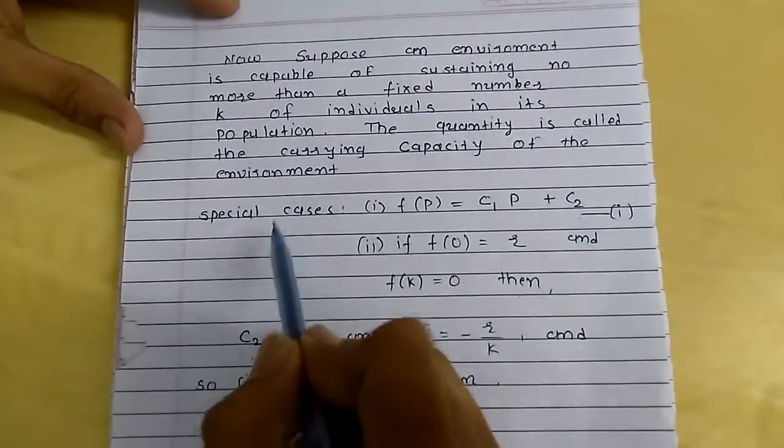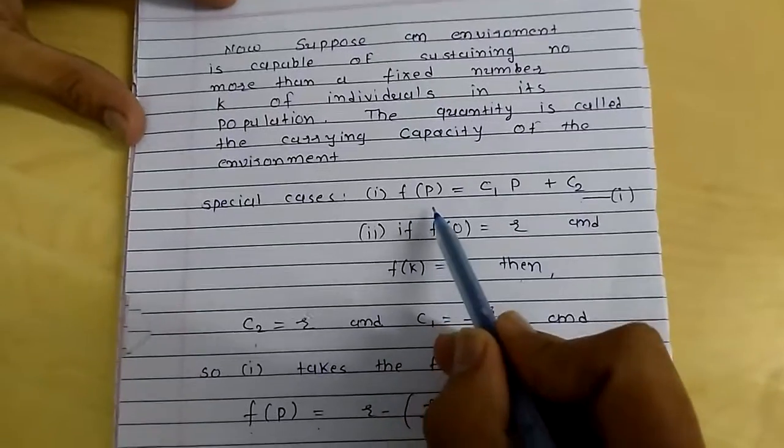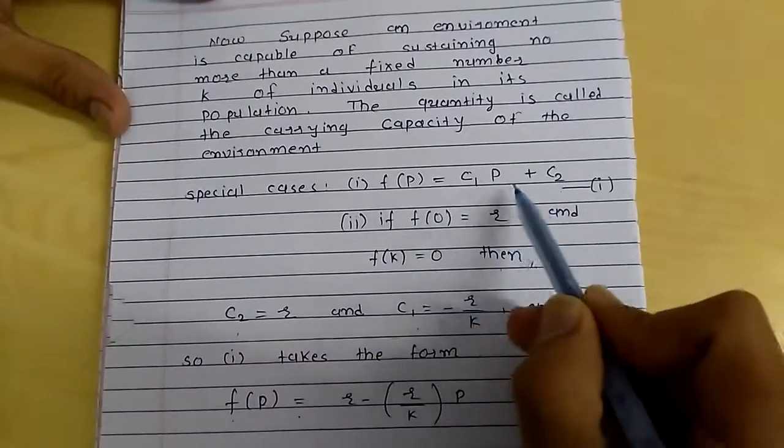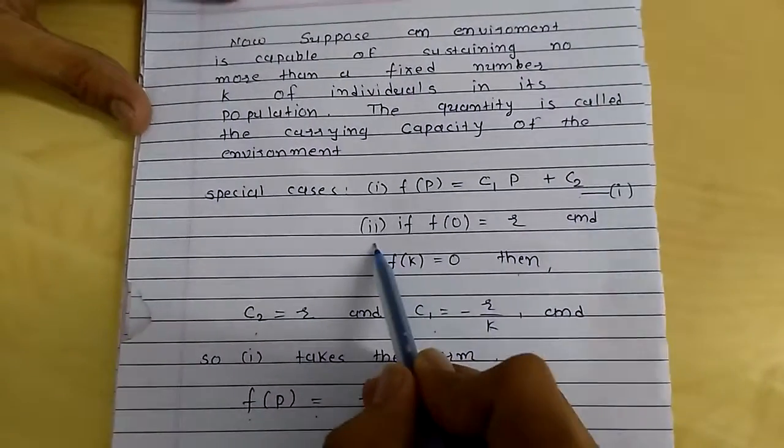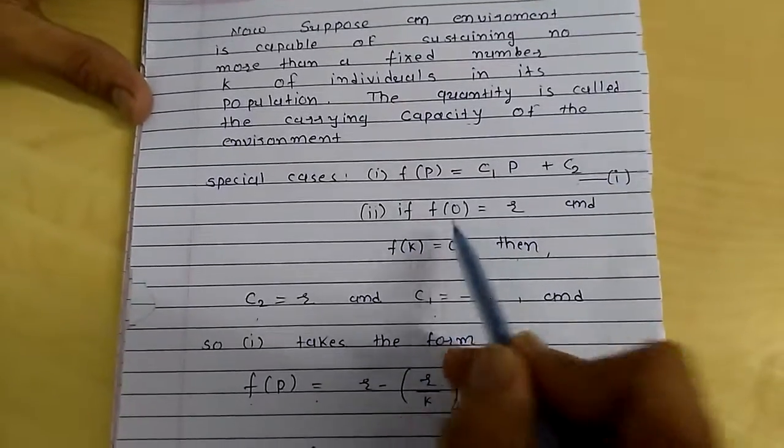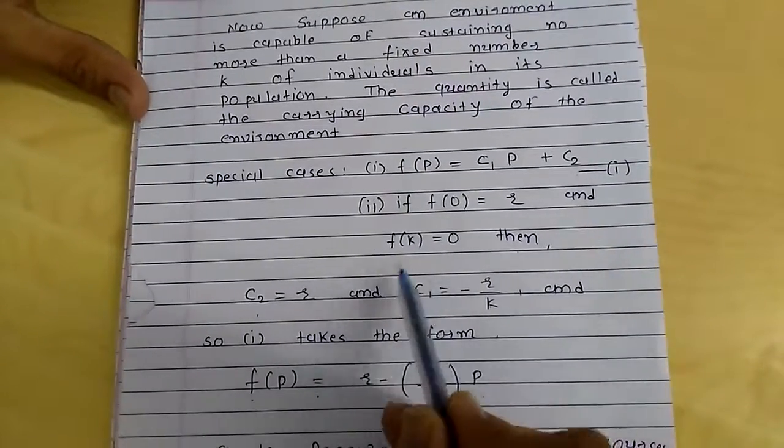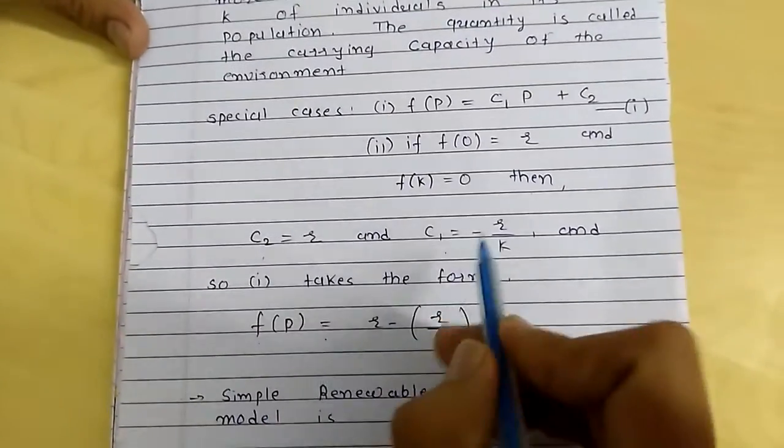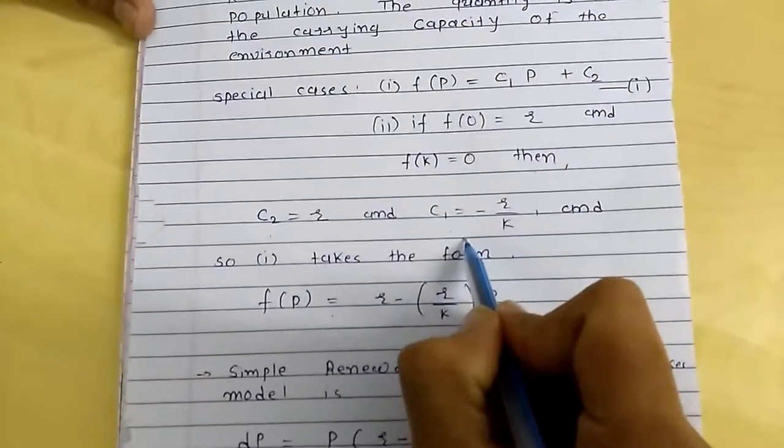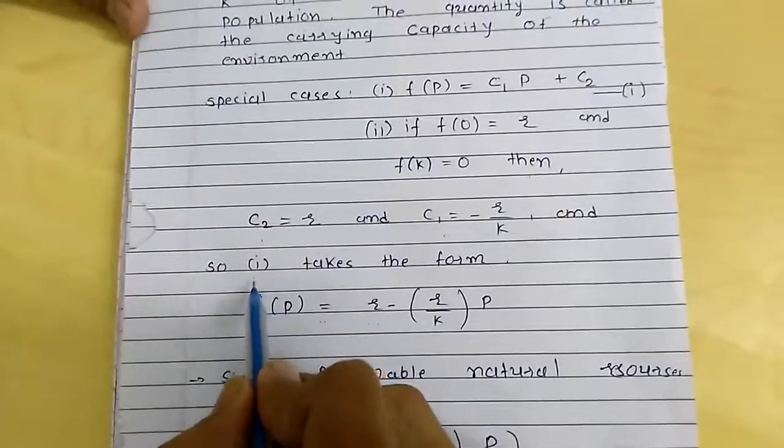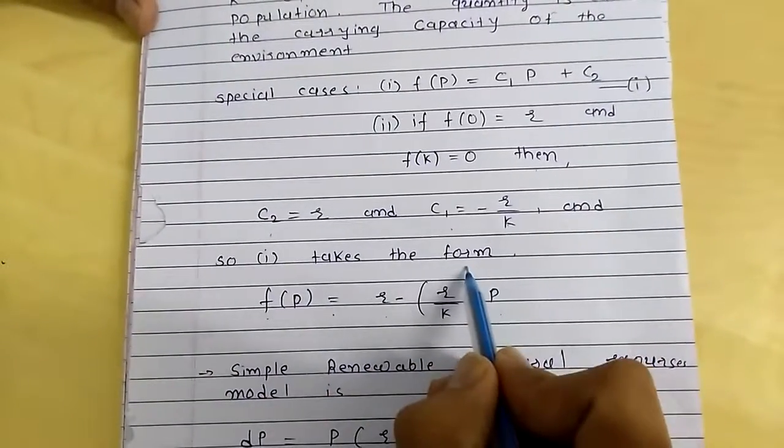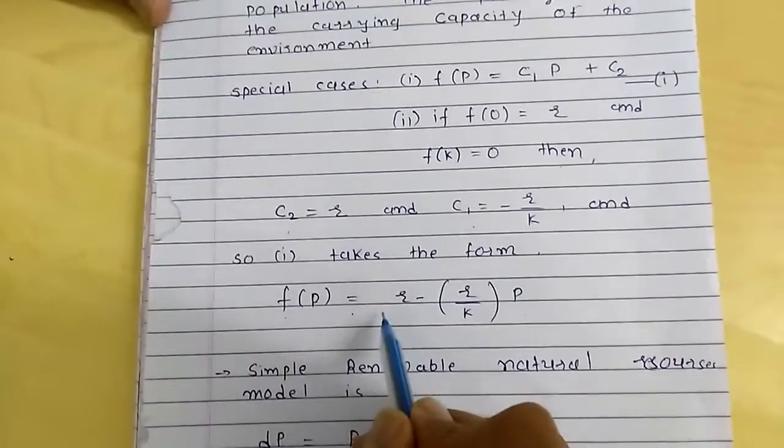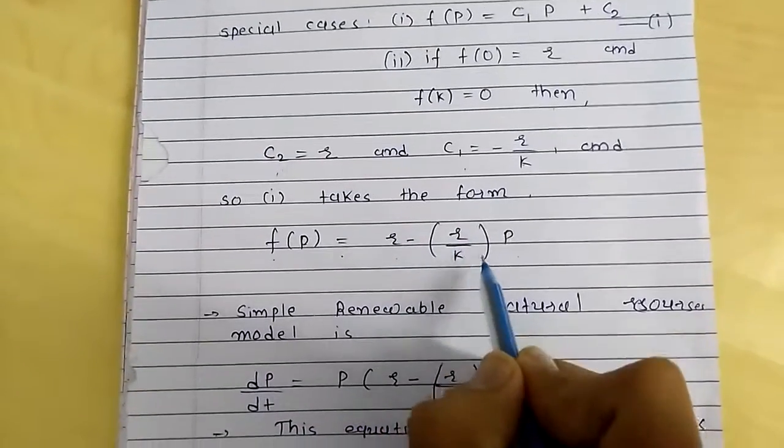Let's see the special cases. Equation 1: f(p) equals c1 times p plus c2. And second, if f(0) equals r and f(k) equals 0, then c2 equals r and c1 equals minus r/k. And so, from equation 1, f(p) takes the form r minus (r/k)p.